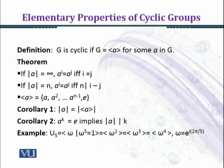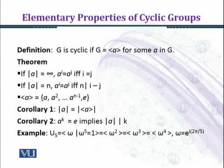We are taking U5. U5 is a cyclic group generated by omega, and it has a total of five elements. We can check what other generators U5 has — for example, whether omega^2 generates it. Taking powers of omega^2: omega^2, omega^4, then omega^2 raised to power three which is omega^6, and we get omega.